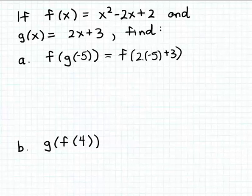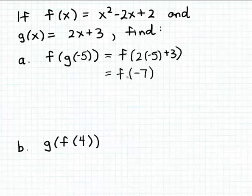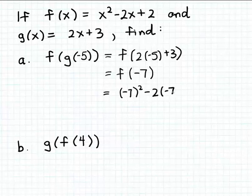Let's simplify two times minus five plus three. That's minus ten plus three — two times minus five is minus ten, plus three gives us minus seven. So this leaves us with evaluating f of minus seven. We substitute minus seven for the input variable x in the formula for f.